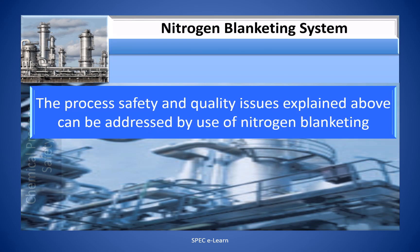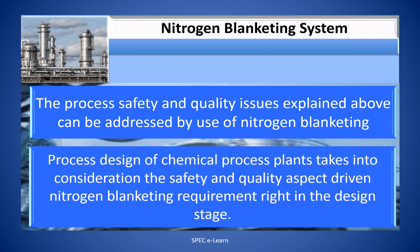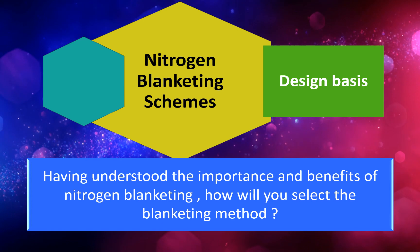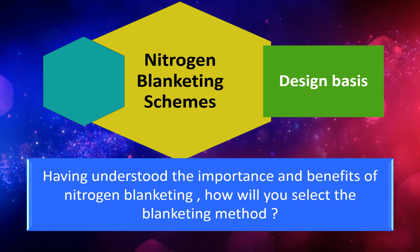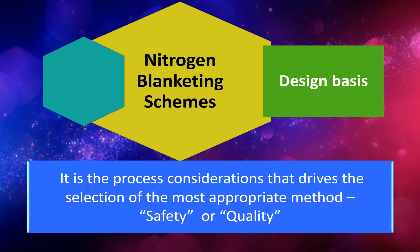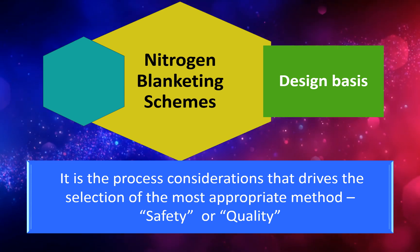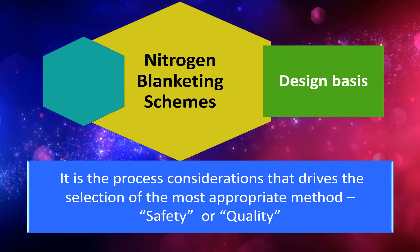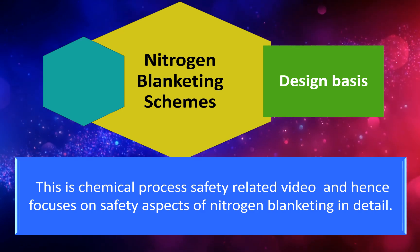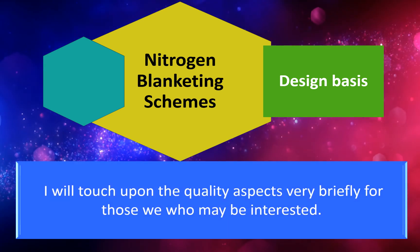The process safety and quality issues explained above can be addressed by use of nitrogen blanketing. Process design of chemical process plants takes into consideration the safety and quality aspects driving nitrogen blanketing requirements right from the design stage. The method or scheme to be selected depends on the application — it is the process considerations that drive the selection of the most appropriate method, whether safety or quality. This video focuses on the safety aspects of nitrogen blanketing in detail, briefly touching on quality aspects.